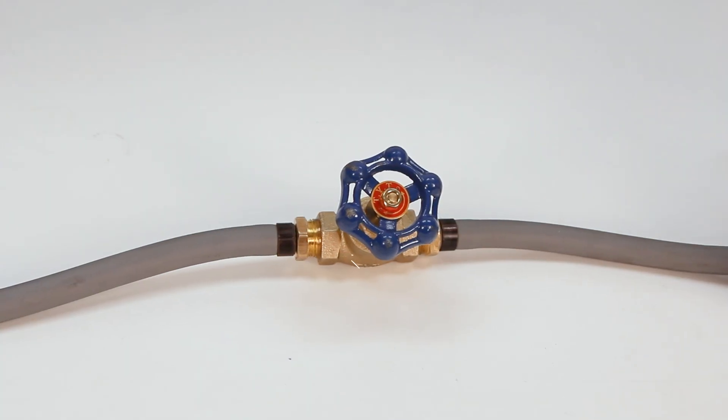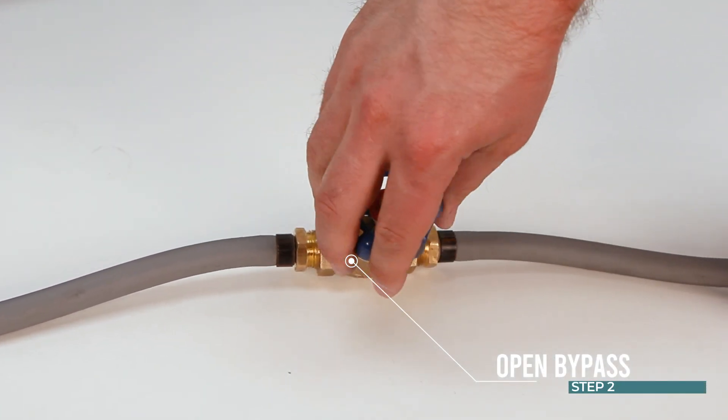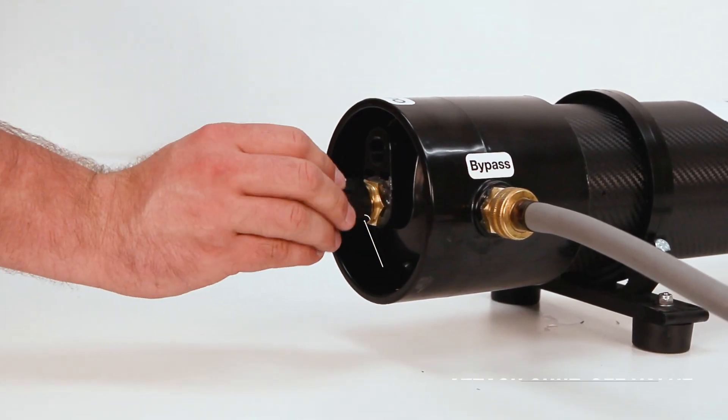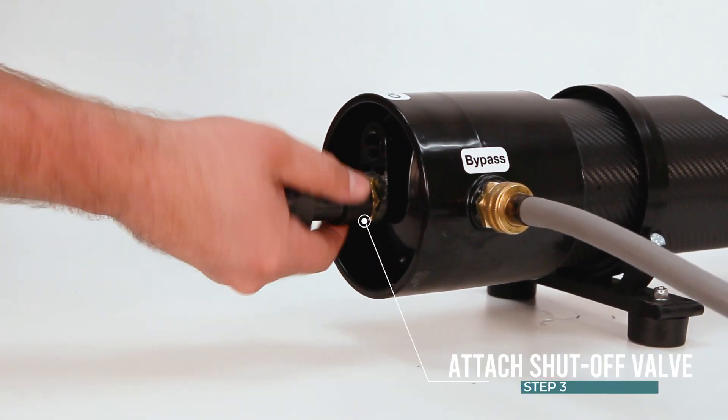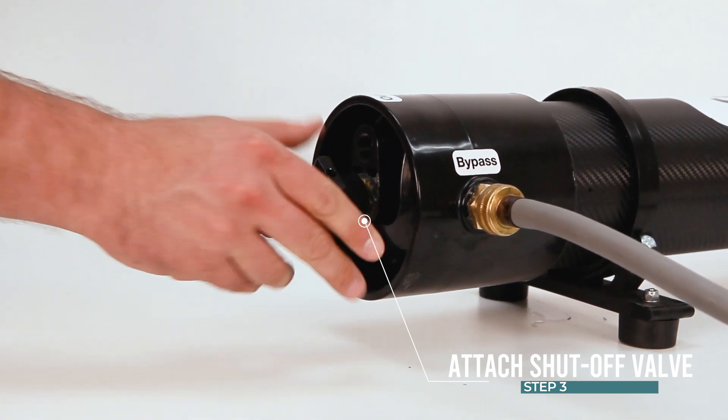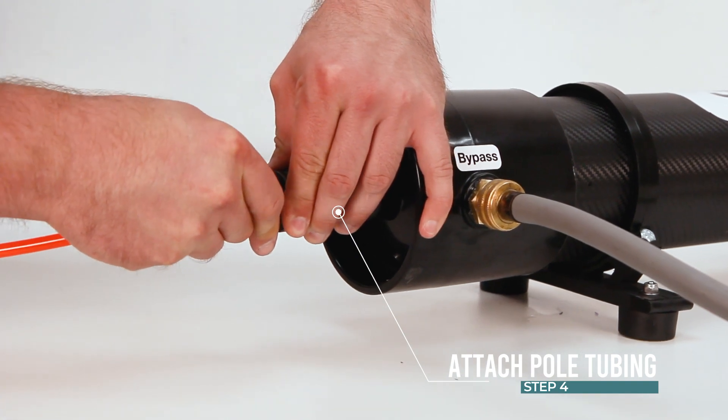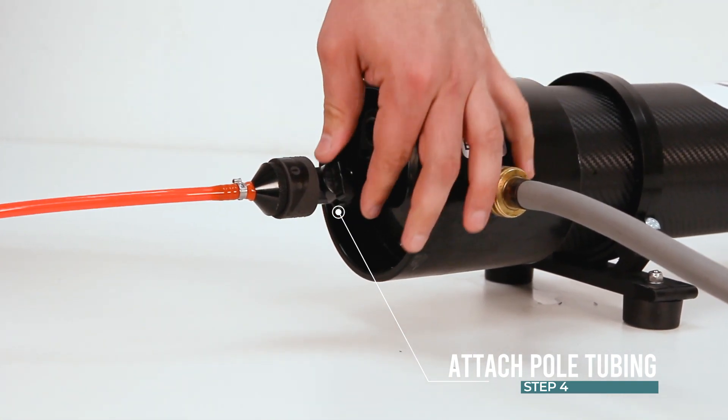Step 3: Attach shut off valve to the Solo system outlet. Step 4: Attach pole tubing to quick connect shut off and turn to open position.